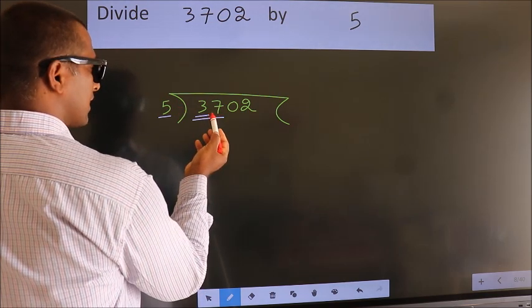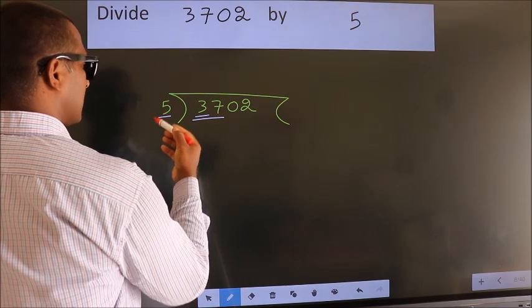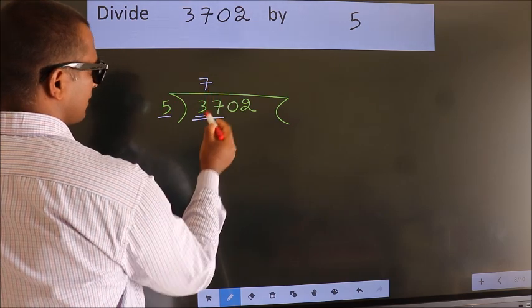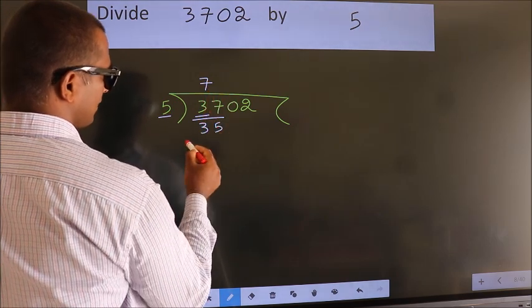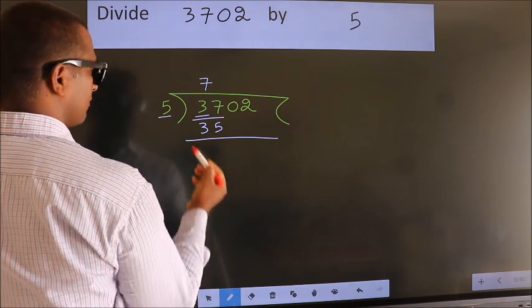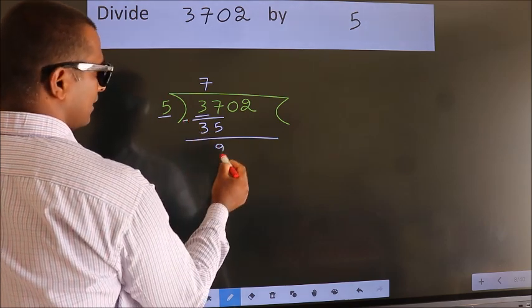A number close to 37 in the 5 table is 5 times 7 equals 35. Now we should subtract. We get 2.